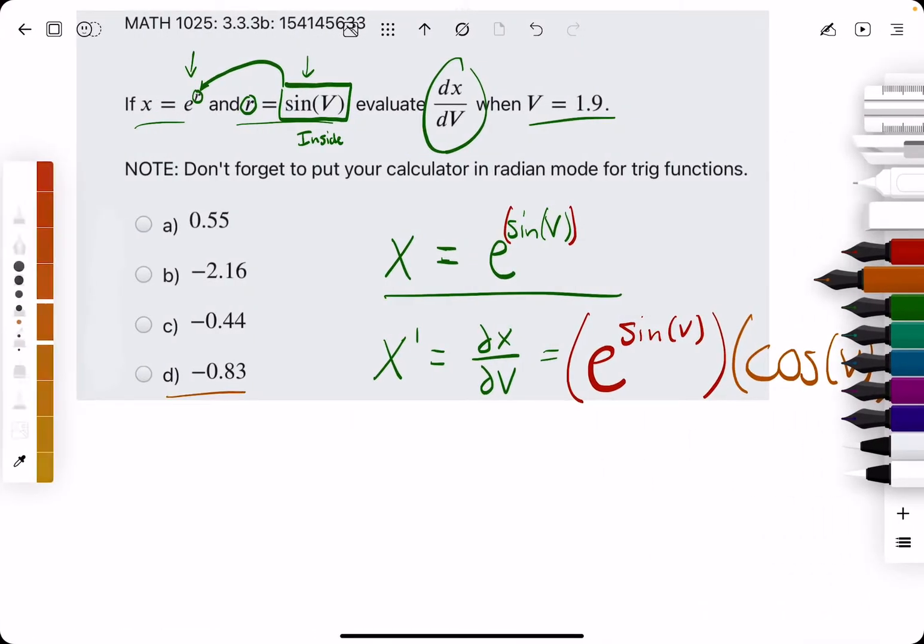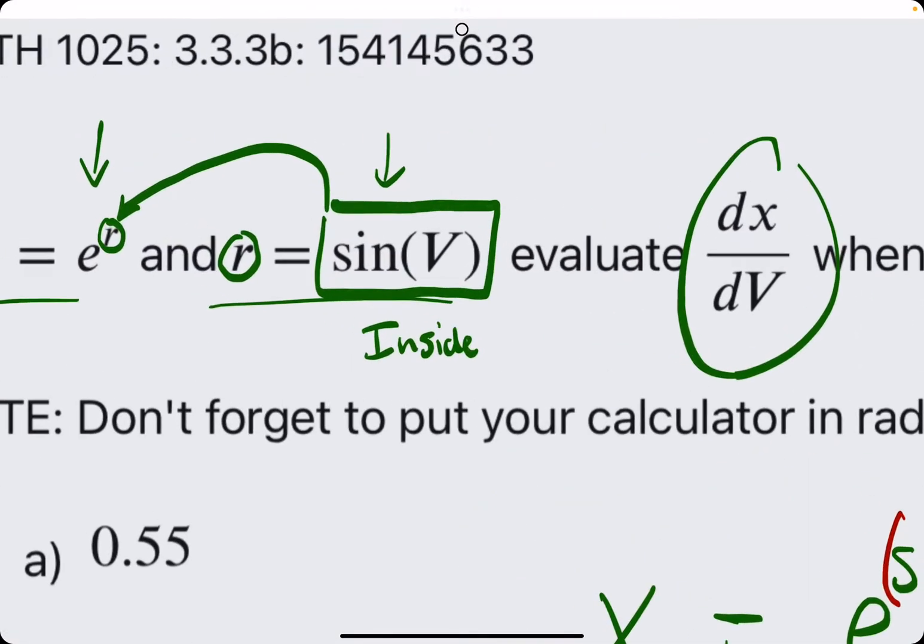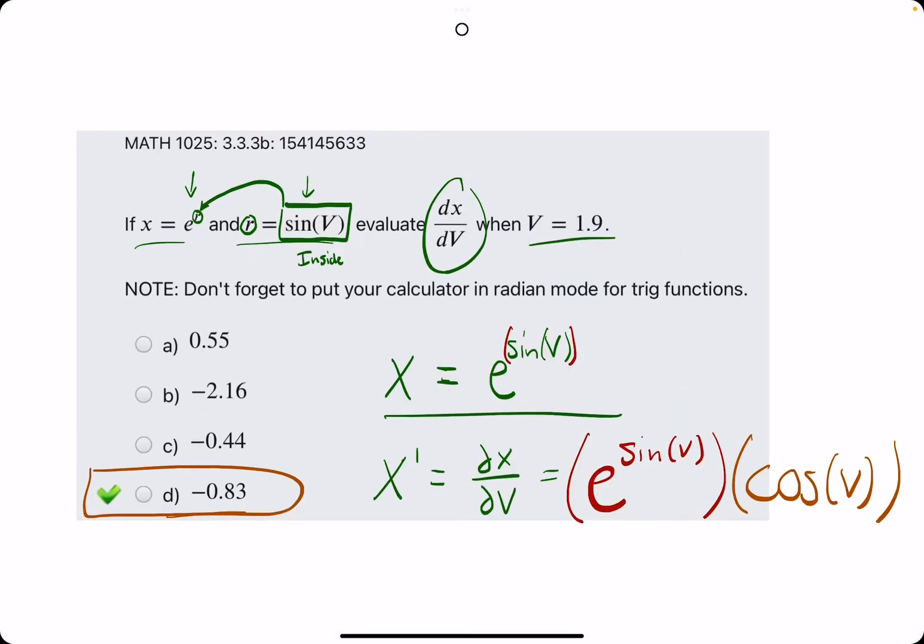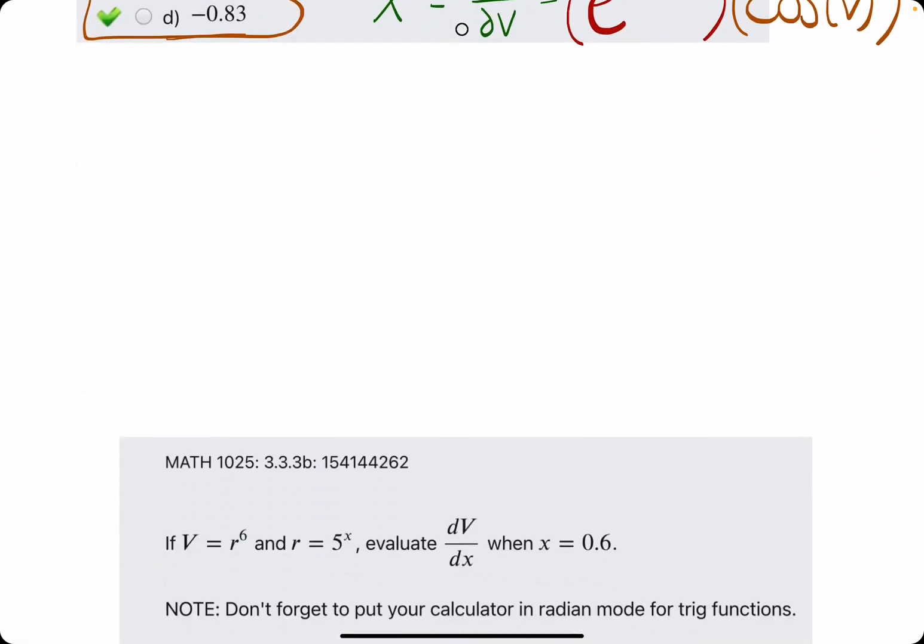Looks like option d. Break out the eraser to see that d is our answer. So, again, always plug the second function into the first, find the derivative using chain rule, plug in the value.